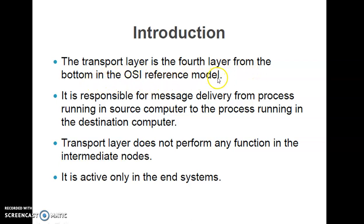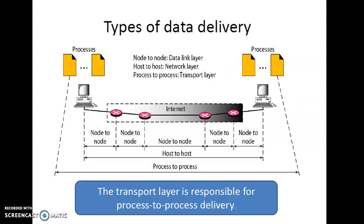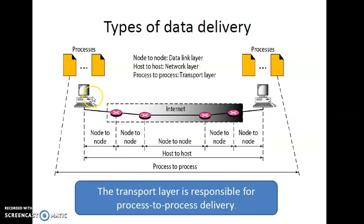The transport layer is responsible for message delivery from a process running in the source computer to the process running in the destination computer. We'll try to understand process-to-process delivery from this diagram. One should understand that the transport layer is responsible for process-to-process delivery.